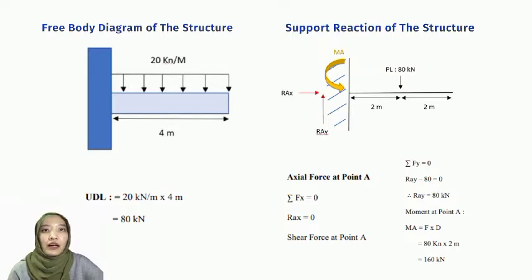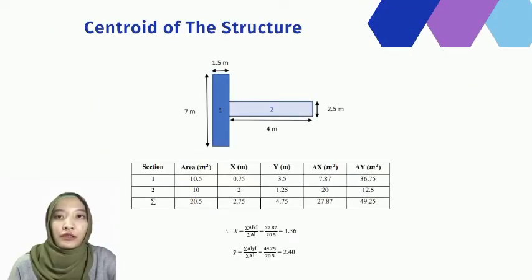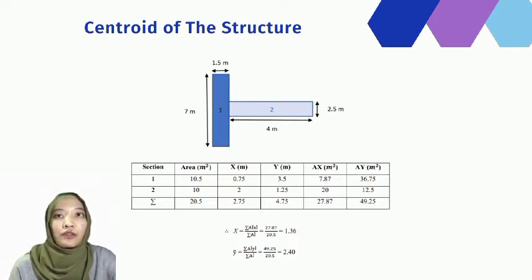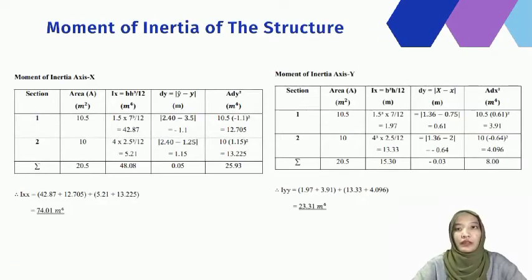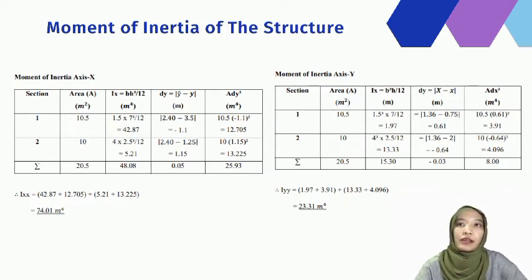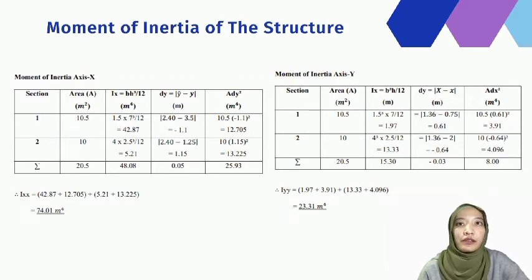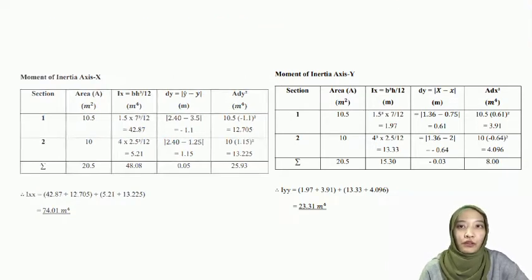After calculation, the support reaction is 160 kN. For the centroid of the structure, the x-axis gives 1.36 m and the y-axis gives 2.4 m. The moment of inertia was also calculated: the moment of inertia at the x-axis is 74.01 m to the power of 4, and the moment of inertia at the y-axis is 23.31 m to the power of 4.